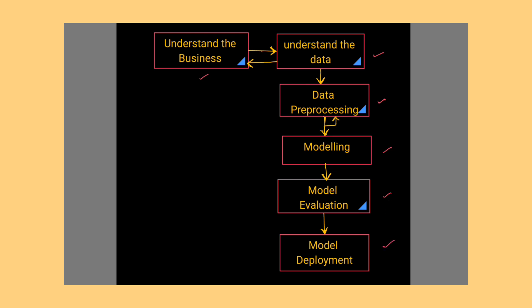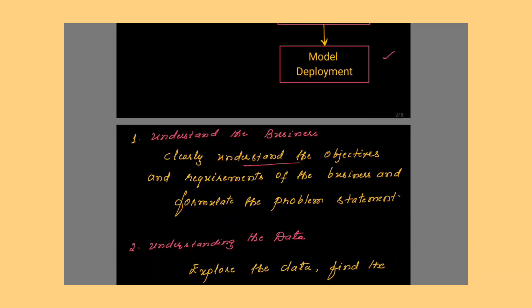When you are making the machine learning model for a particular task, for what particular business, for what particular job you are making, that you need to understand very clearly. Clearly understand the objectives and requirements of the business. Only once you understand all these things, then you are able to formulate a problem statement. If the problem statement is formed, then only it is easy for you to proceed for the next step.